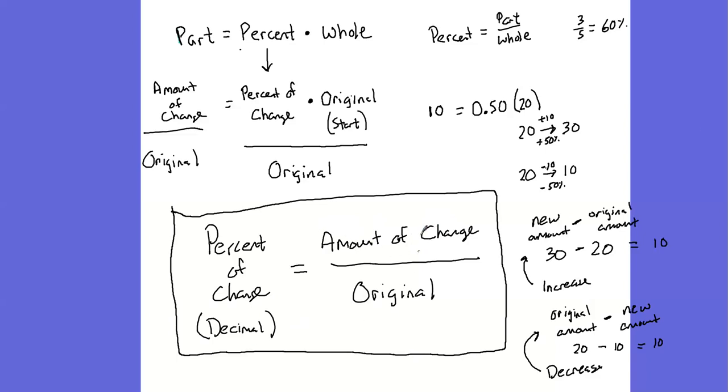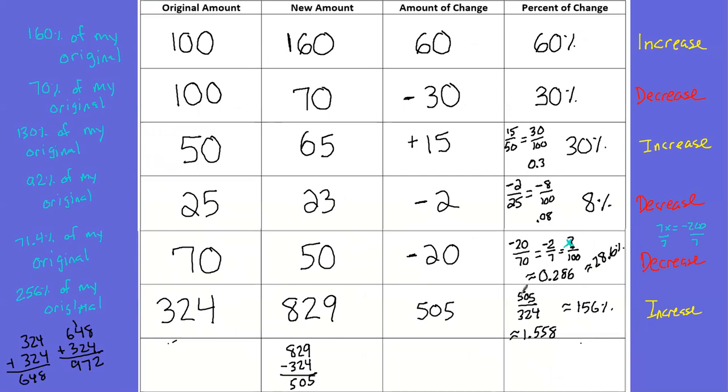Let's relate this idea to what we did in the last video. So if my percentage of change is always my amount of change divided by my original, that is exactly what I did in this table. This is my amount of change, 505, divided by what I originally had, 324. This is my amount of change, 20, divided by what I had at the start, 70.